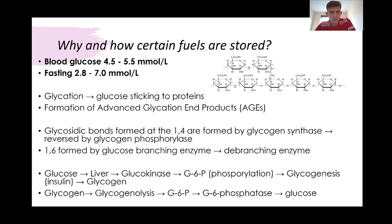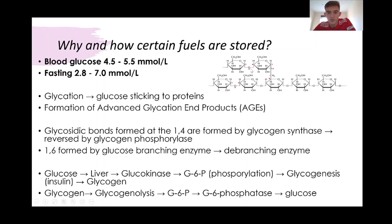Glucose is stored as glycogen with the use of the hormone insulin. In glycogen, we have a glycosidic bond forming at carbon 1. Looking at the image, we've got that link between carbon 1 and carbon 4 via this glycosidic bond. This is done through the enzyme glycogen synthase. Then once every couple of glucose molecules, we get this formation of a carbon 1 to 6 bond, and that's done by the branching enzyme.